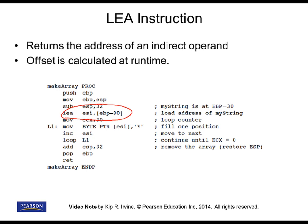We're getting that address into ESI because we then want to loop through the array, and you can see ESI being used to fill up this array with the star character. There's no great purpose to this subroutine right now — it's really designed just to show a concept — but the only way to get that location EBP minus 30 is to use the LEA instruction. LEA means load effective address, and it involves a runtime calculation of an address.